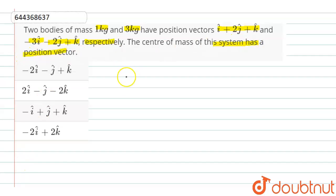We know that position vector of a center of mass, that is r cm, is calculated by the formula m1 r1 bar plus m2 r2 bar divided by m1 plus m2.